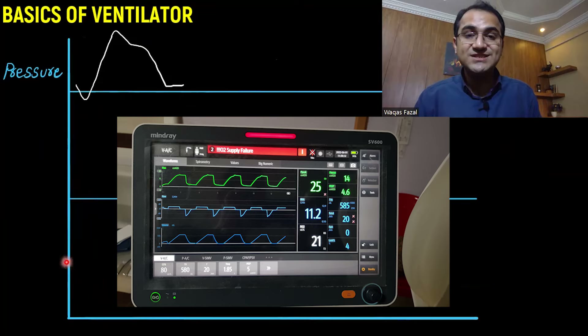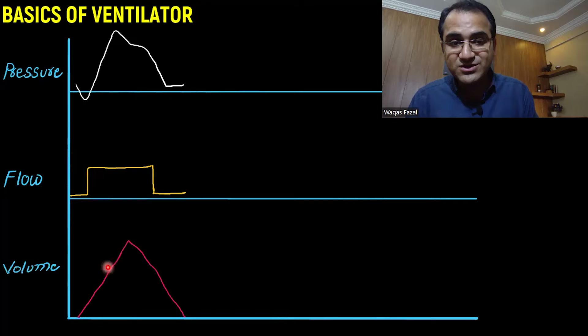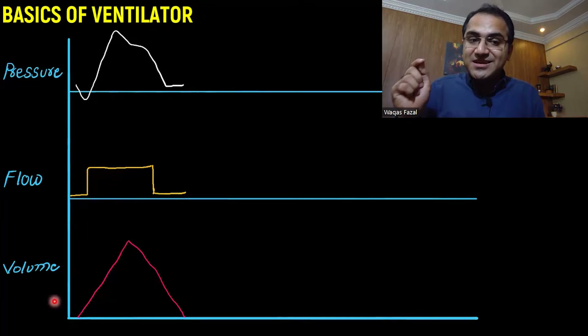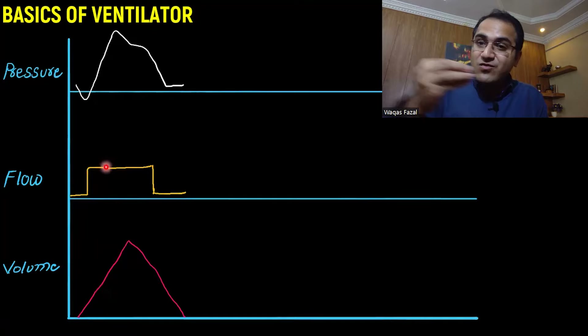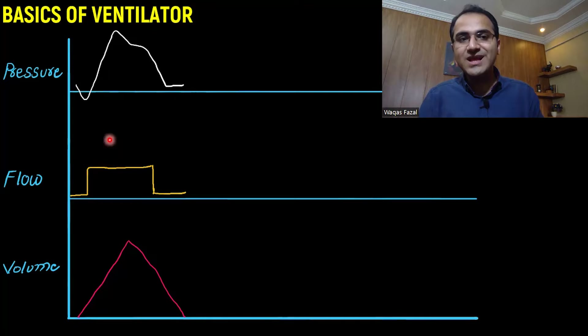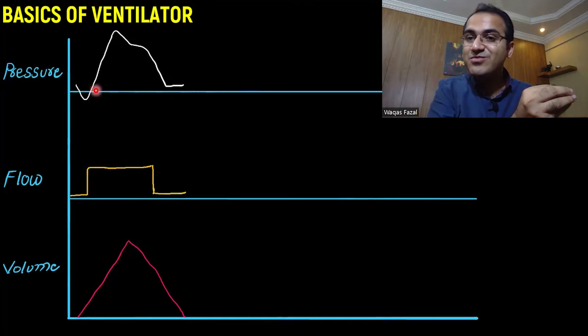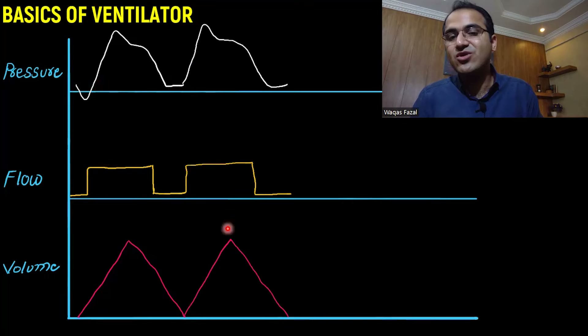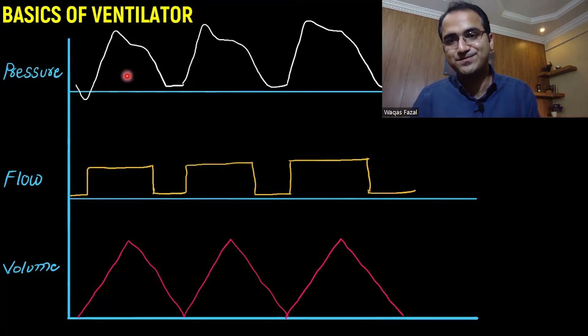On the ventilator, you will see certain graphs running. The first shows pressure, the second shows flow — whether air is flowing through the tubing quickly or slowly — and the third shows volume. If you have set a constant volume per breath, that volume is delivered with each breath, and the pressure required to deliver it is shown on the pressure graph.